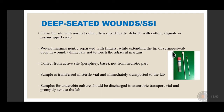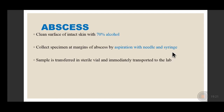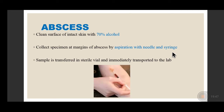Always collect from the active site — never from necrotic or healing areas. Transfer the sample in a sterile vial and transport immediately. If anaerobic organisms are suspected, transport in an anaerobic transport vial and send promptly. Ideally, two samples should be taken. For an abscess, clean the intact skin surface with 70% alcohol, then withdraw the sample with a needle and syringe and transfer to a sterile vial, transporting immediately.